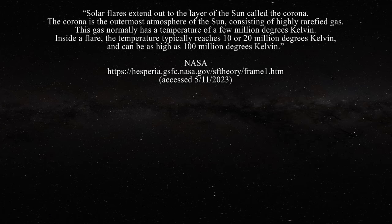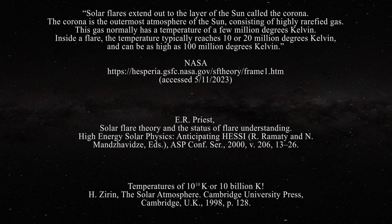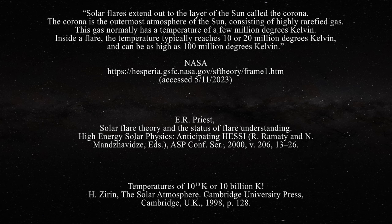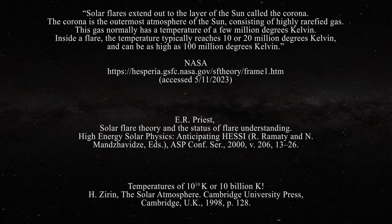Similar temperatures have been advanced by others, and Harold Zirin has highlighted that temperatures as elevated as 10 to the 10th, or 10 billion Kelvin, have been detected in the corona by observations using the radio band. Clearly such temperatures are unreasonable and result from improperly assigning temperatures to processes which are not governed by random physical events. Harold Zirin issued a warning in this regard, but it has been largely ignored by solar physicists.